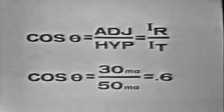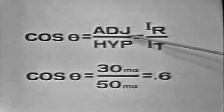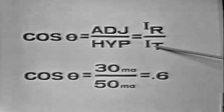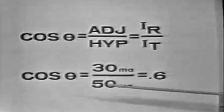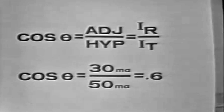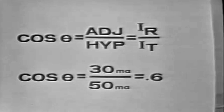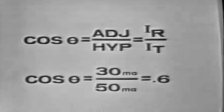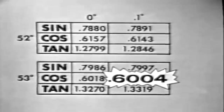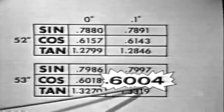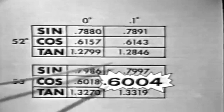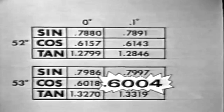When we solve for the sine, cosine, or tangent, we're finding the ratio of one current to the other, which determines angle theta, and that number is then looked up in the trig tables. For example, using the cosine: cosine equals IR over IT, or 30 milliamps over 50 milliamps, giving cosine of theta equals 0.6. Looking in the trig tables for the cosine nearest 0.6, which is 0.6004, we find the angle is 53.1 degrees. The procedure is very simple and very accurate.